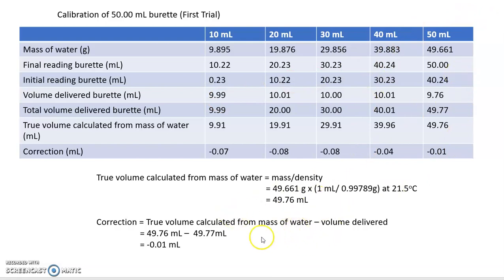For the example calculation shown here for 50 ml: the mass of water when you deliver 50 ml from the burette will be 49.661 g. We get the true volume calculated from the mass of water as 49.76 ml. The correction will be true volume 49.76 ml minus the volume delivered of 49.77 ml, so the correction is negative 0.01 ml.